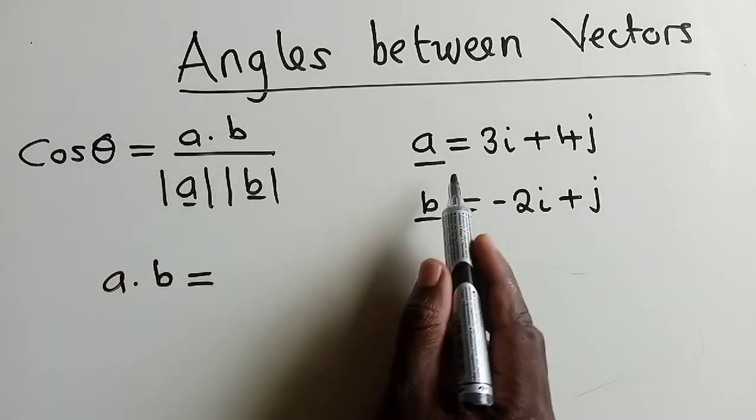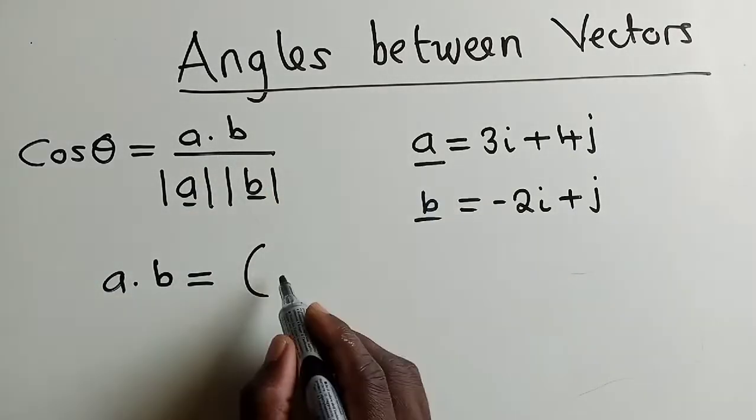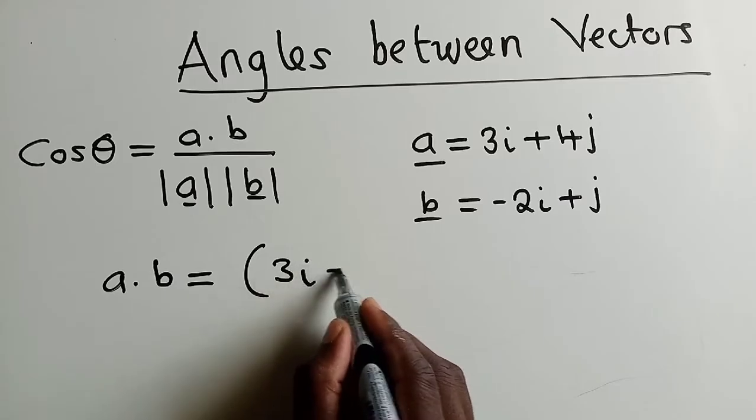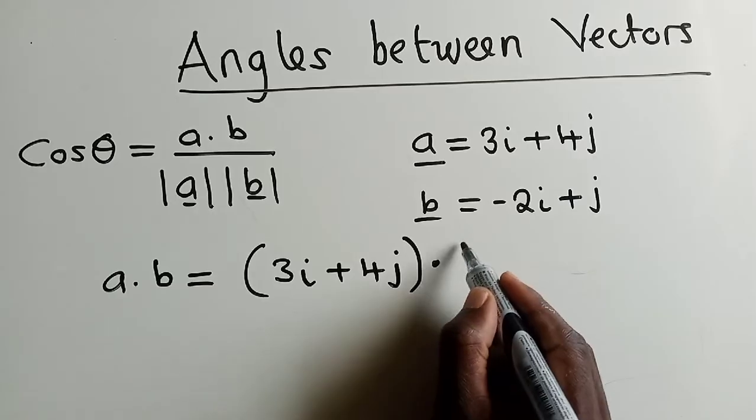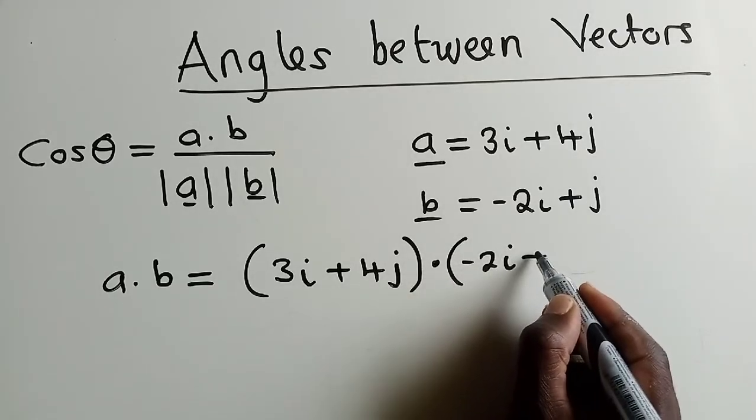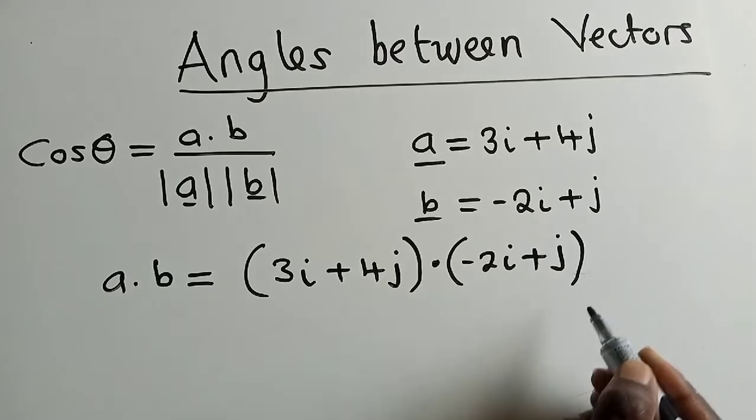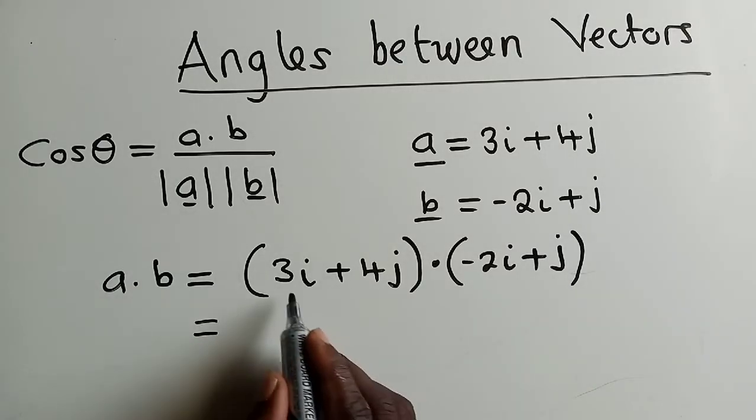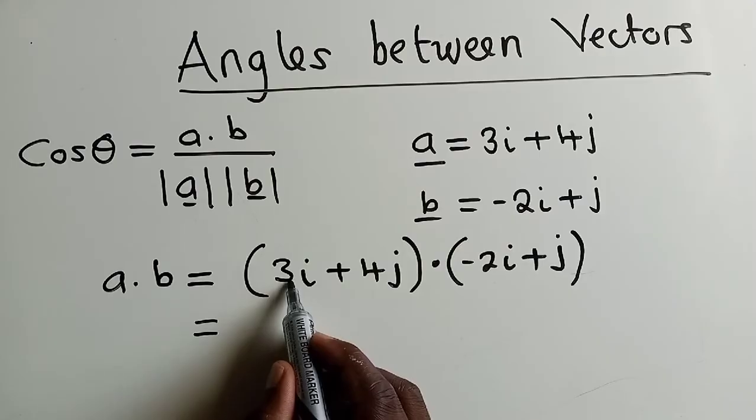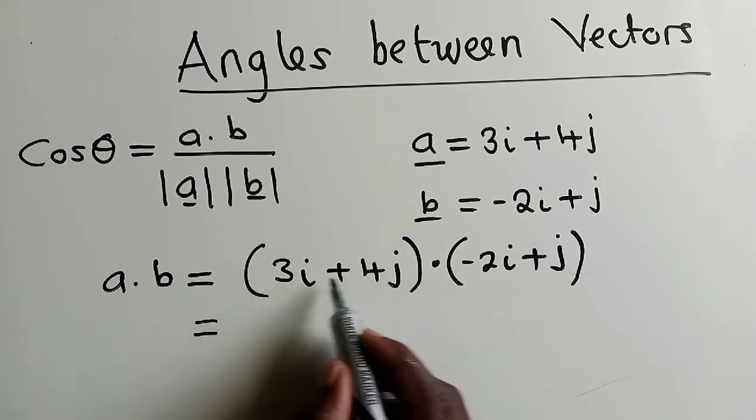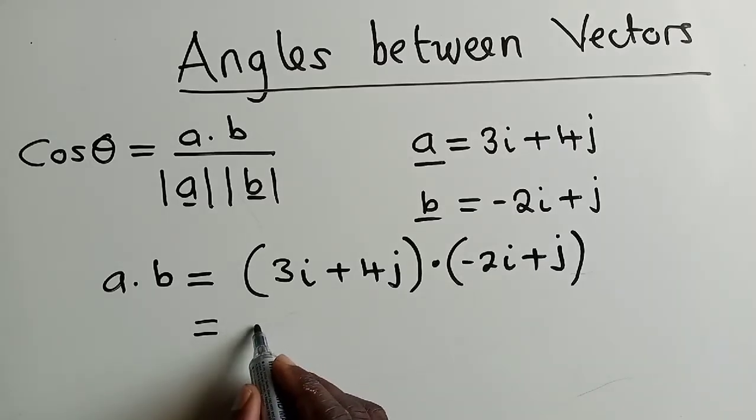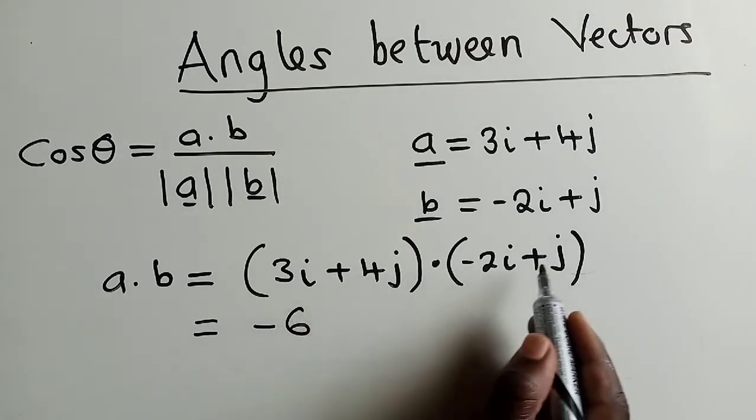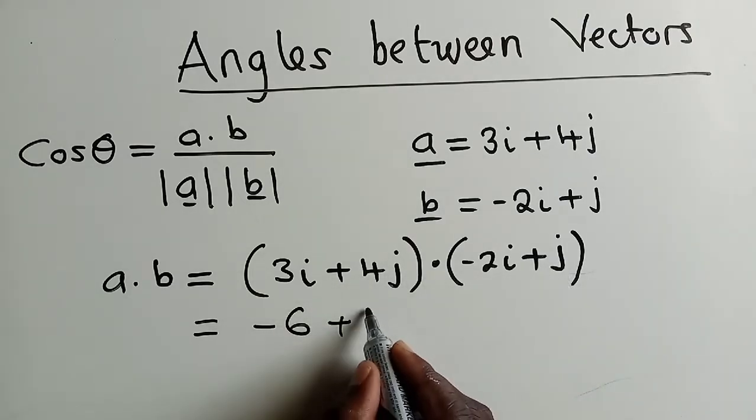So, this is the dot product. We get our vector A, which is 3i plus 4j, multiplied by negative 2i plus j. This j simply means it's just 1. You multiply 3i multiplied by negative 2i, it will give you negative 6. 4 by 1 will give you 4.